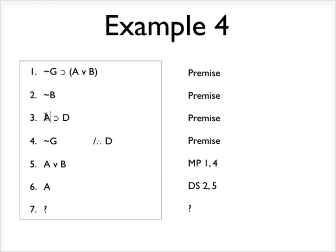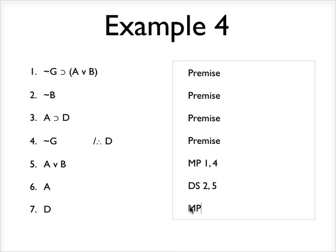And, of course, if I look at line three, I've got a conditional statement where the antecedent is A. And you should know what rule I can use to derive the conclusion, D, right? It's just another case of modus ponens on lines three and six.